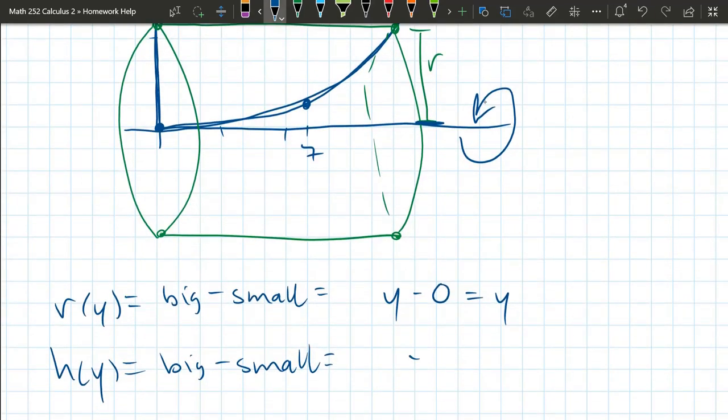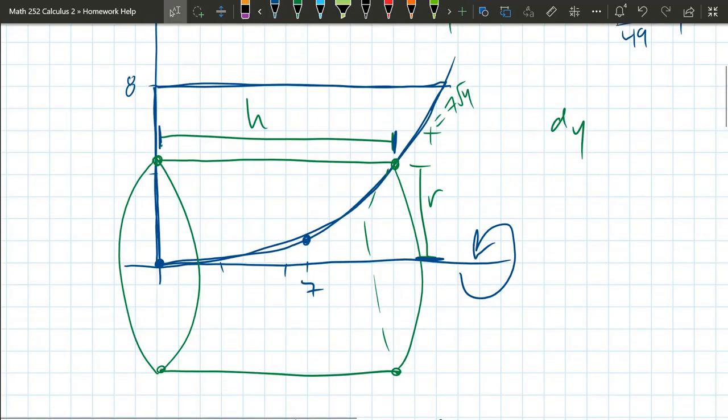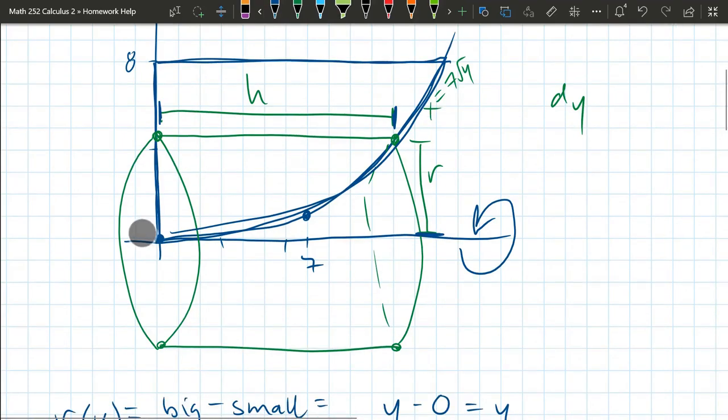So the small again is going to be zero. Coincidence, although it shows up quite a bit. Now the big, the big is changing. The big is on this curve. And we've already written it as a function of y. So it's 7√y is the big.